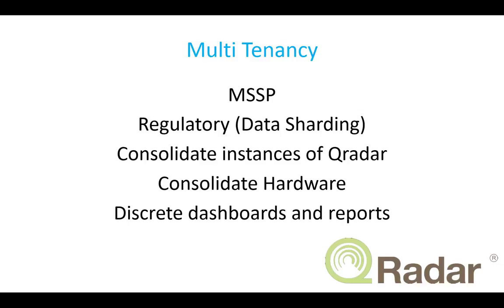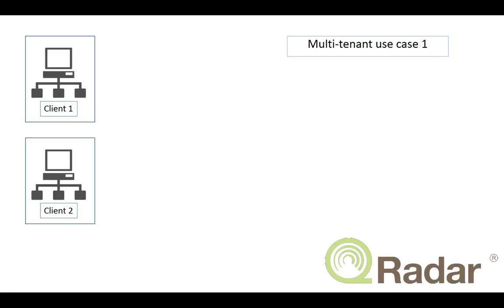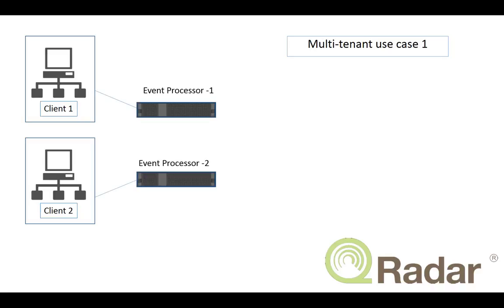I want to go through a couple of examples. The first is multi-tenant client 1 and client 2, where each is attaching to their own event processor. The event processors are smart enough to identify that data is coming from processor 1 and processor 2, so when the console gets it, it's going to know things are coming from client 2 because they're coming from processor 2, and all the data will be stored explicitly marked as processor 2.